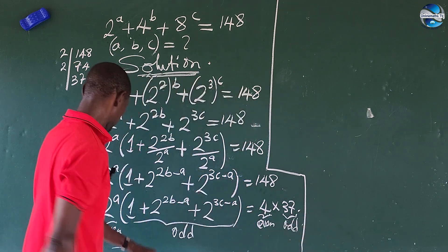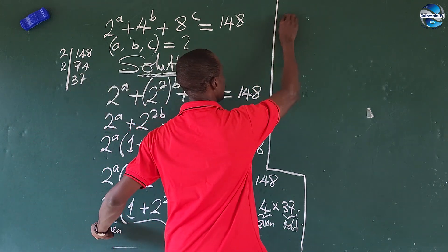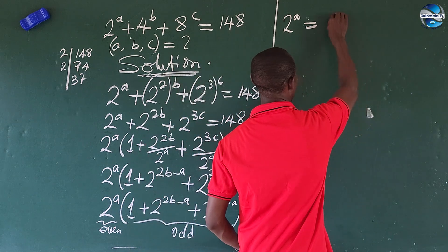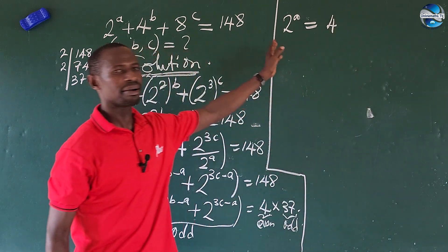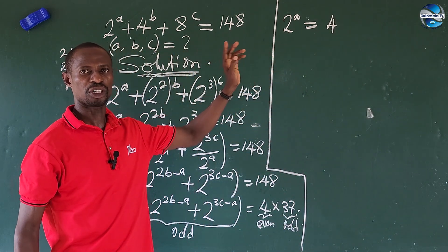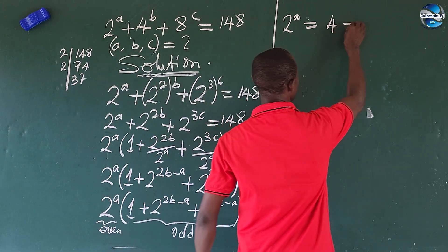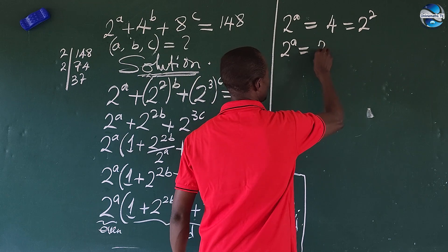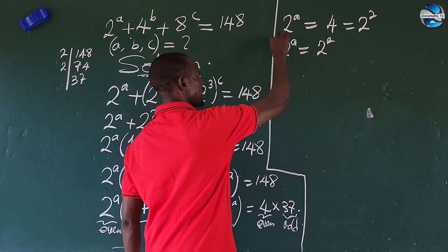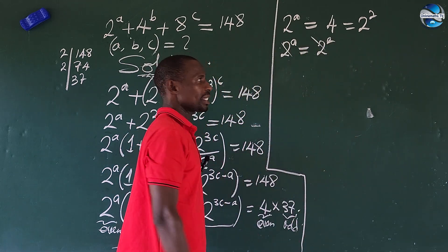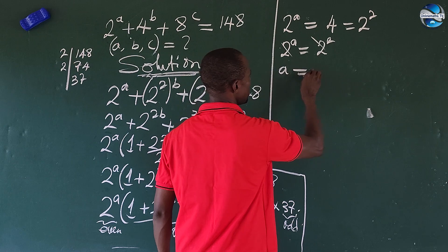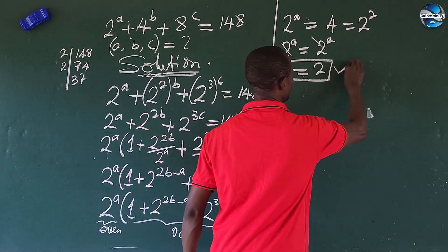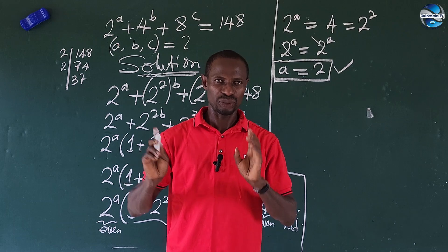Equating the even parts: 2 to the power of A equals 4, which we can rewrite as 2 to the power of 2. Since the bases are the same, they cancel, giving us A equals 2. So we have our first variable: A equals 2.